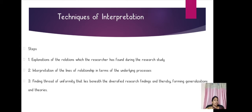Techniques of interpretation: Step 1 — explanation of the relation which the researcher has found during the research study. The researcher gives an explanation regarding the relations interpreted between the variables. Step 2 — interpretation of the lines of relationship in terms of underlying process. Step 3 — thread of uniformity that lies beneath the diversified research findings, and thereby forming generalizations and theories.